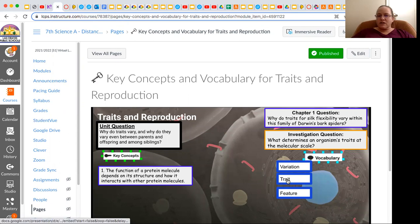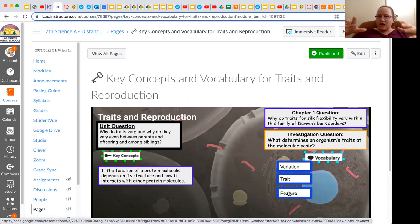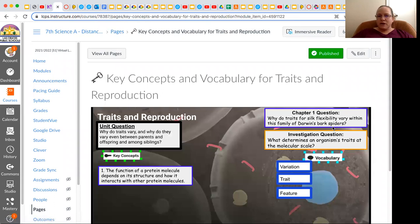Why do they vary between parents and offsprings and among siblings? So first, we have to understand the difference between trait and feature. So that's what's going to happen in the first lesson. And then you're going to take some time to understand how to use the sim, as well as think about traits for our question about Darwin's spiders.